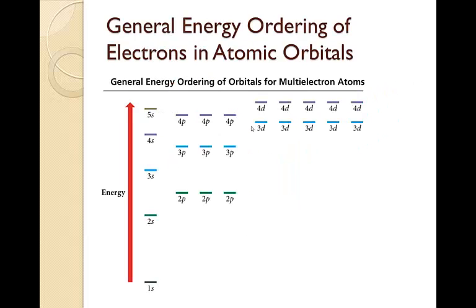This is the arrangement of the orbitals by energy: 1s, 2s, 2p, 3s, 3p. Notice it goes to 4s before it goes to 3d.